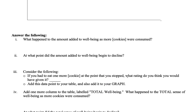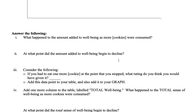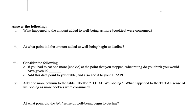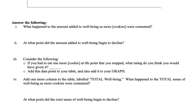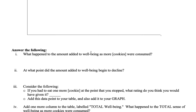Then answer these questions: as you consumed more, what happened to your amount added to well-being? At what point did that amount added begin to decline? That will vary from consumer to consumer. And consider: if you had to eat one more unit at the point that you stopped, if somebody had forced you to have another one, what kind of rating would you have given it? Put that hypothetical point on your table.